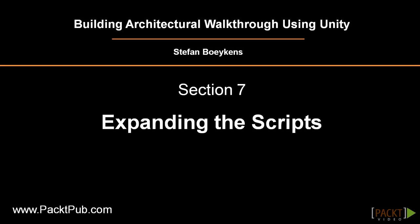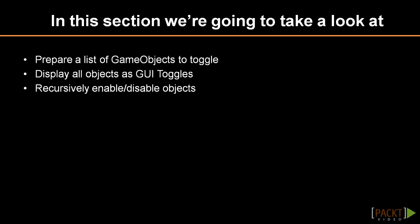This is the first video of section 7 on scripting. This section will expand our scripting knowledge from section 6. In this video we'll add a list of toggle boxes on screen to hide or show pre-selected game objects. Hiding and showing objects can be used to allow the user to control the visibility of design options, to hide building parts or to toggle the display of furniture.